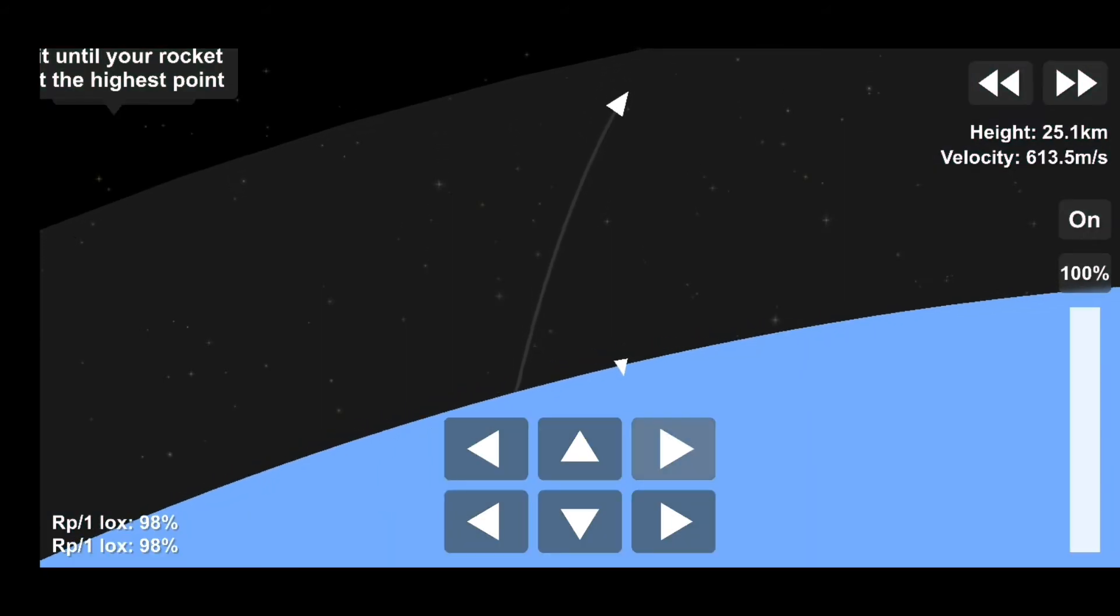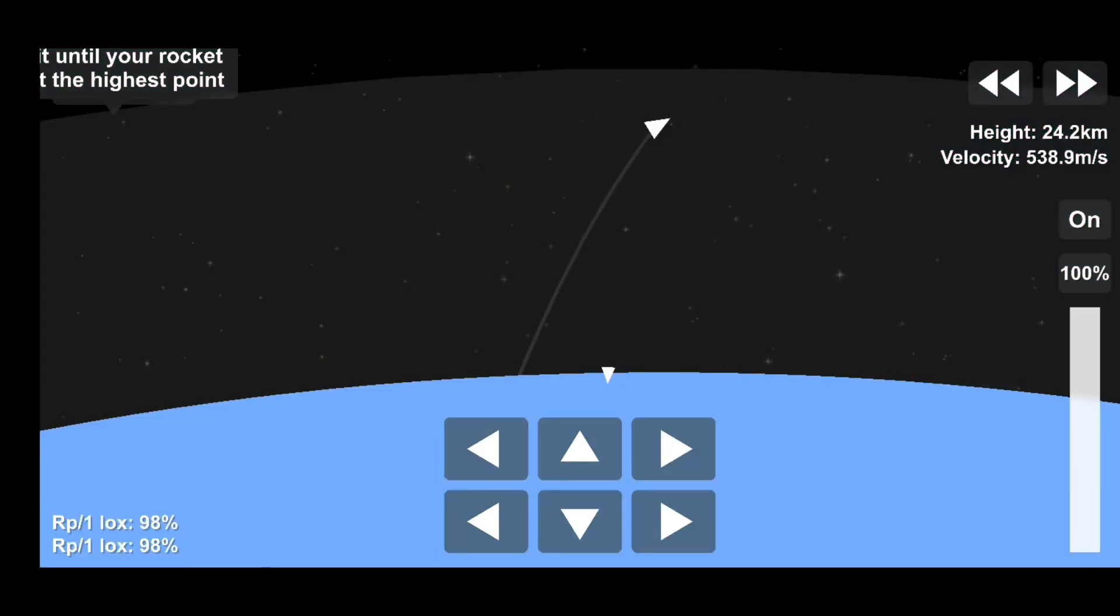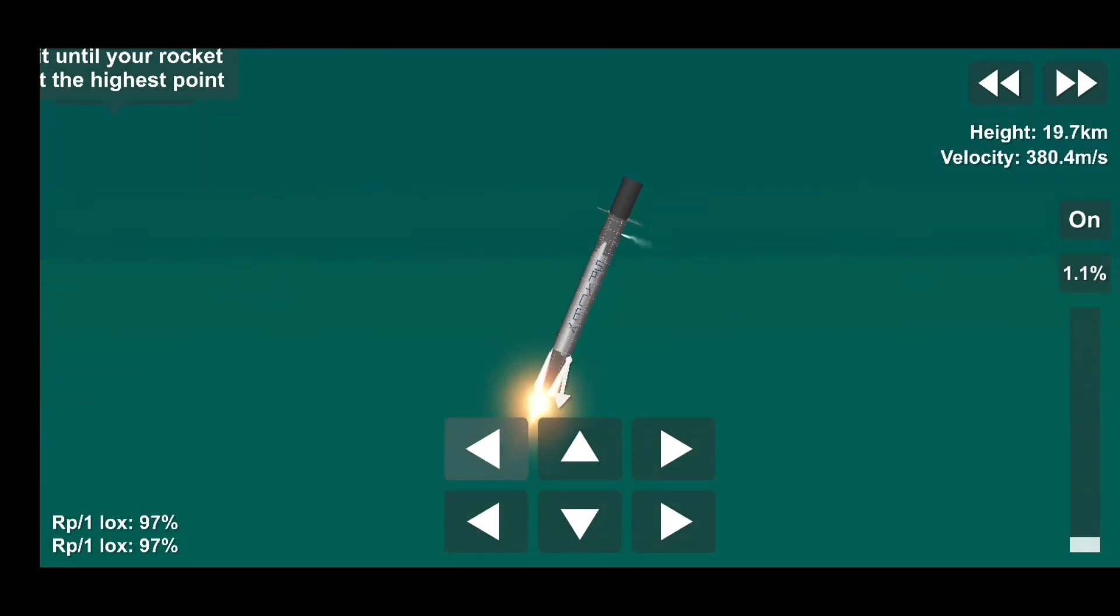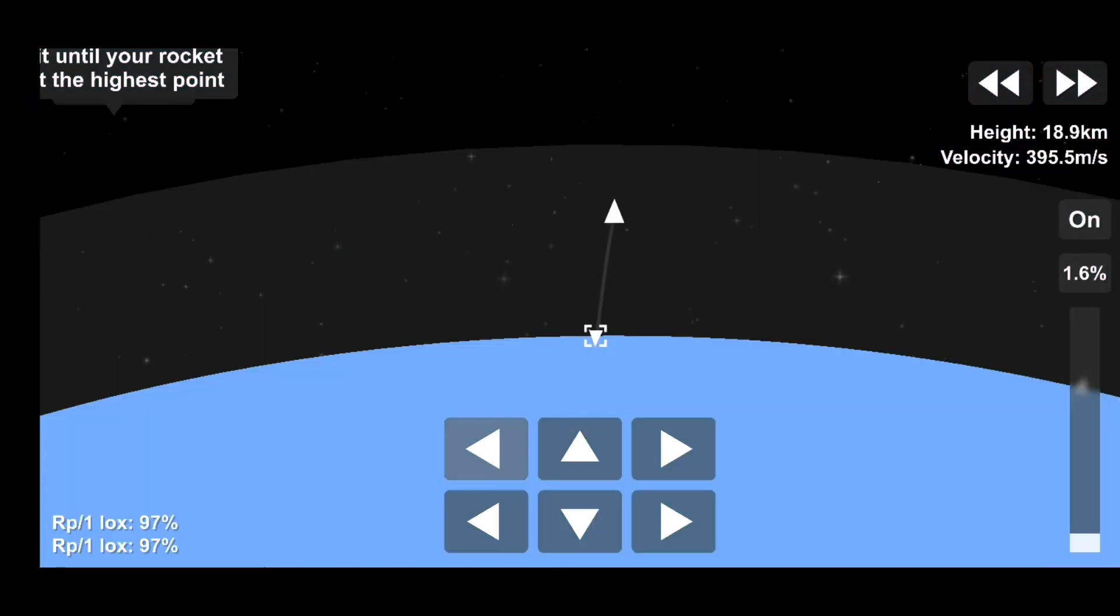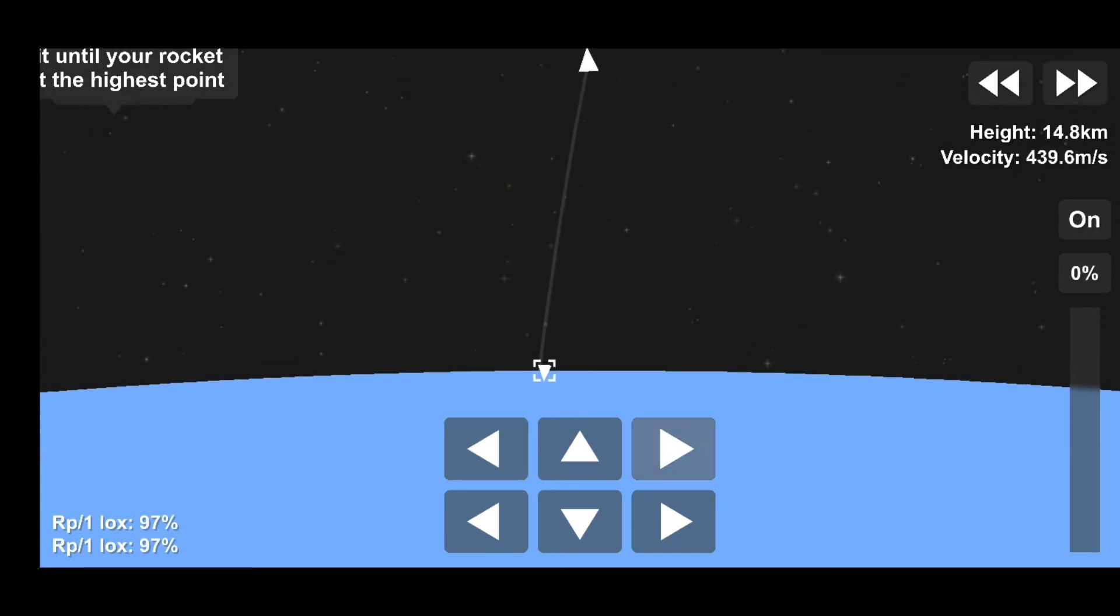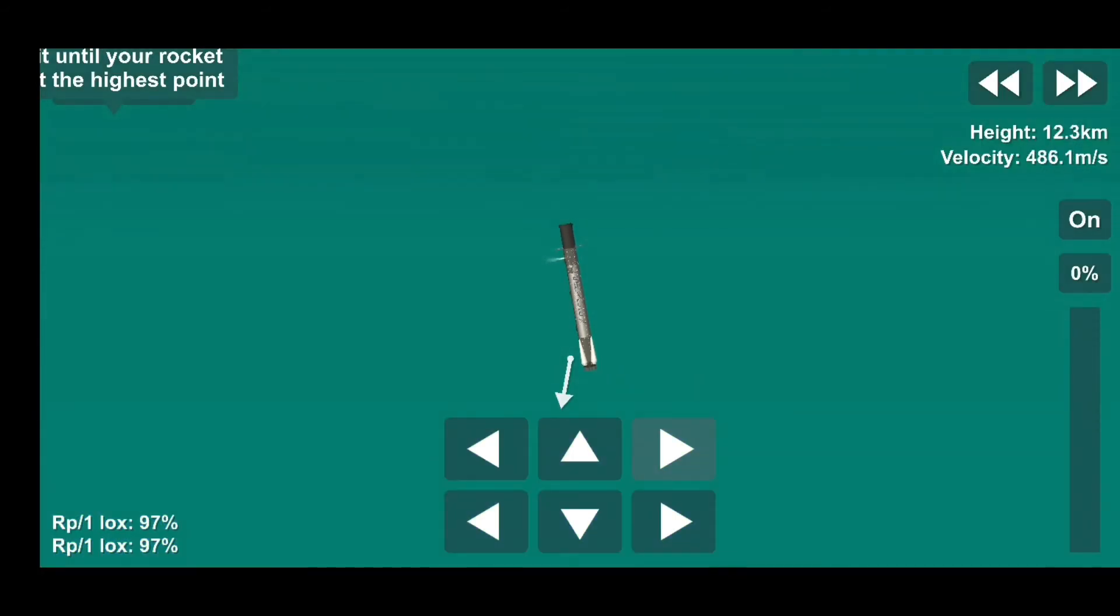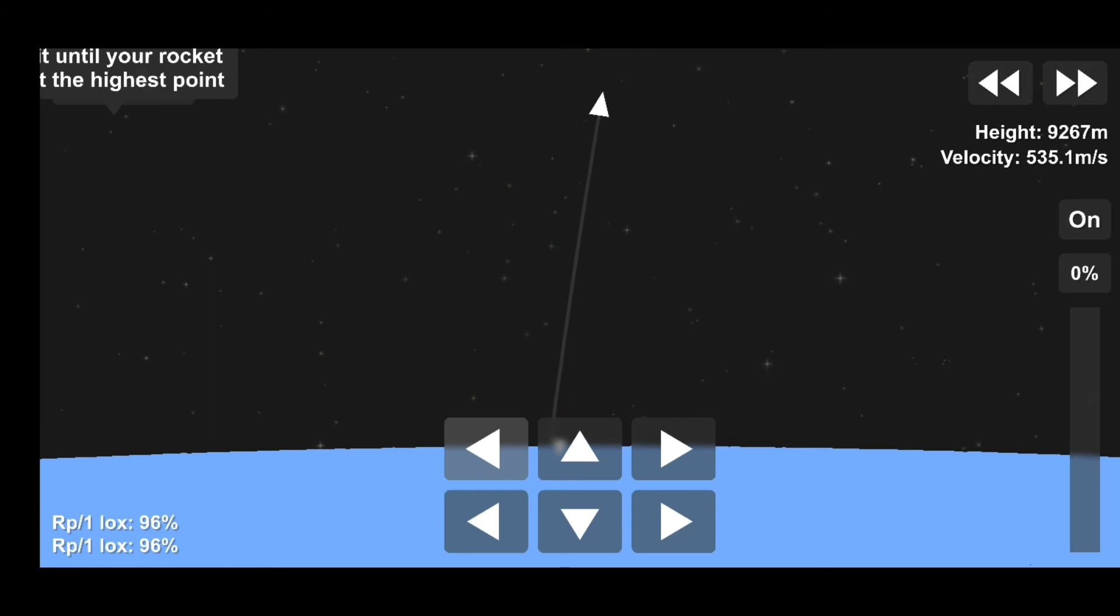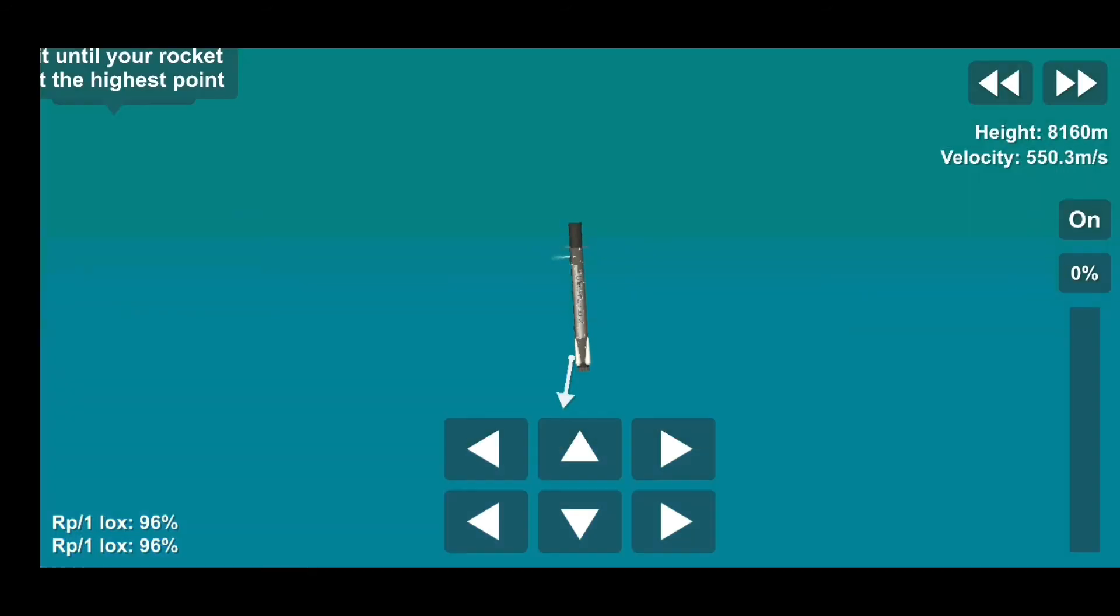Stage one entry burn startup. All right, so this 20-second burn has just begun, and you can see that there on the left-hand side of your screen. If you look closely, you might be able to see those grid fins actuate to assist. Stage one entry burn shutdown. Steering of that stage one, and as you just heard, shutdown of that entry burn.